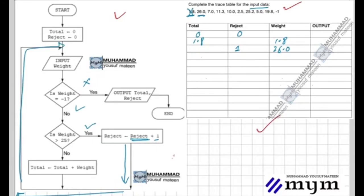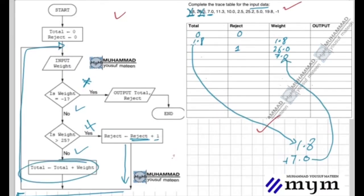Now the input is 7.0. We check the weight. It's not minus one, not greater than 25. So total is calculated: 1.8 plus 7.0. One point eight is from here, and seven point zero is the current weight. We add them together: 1.8 plus 7.0 equals 8.8. The answer is 8.8.